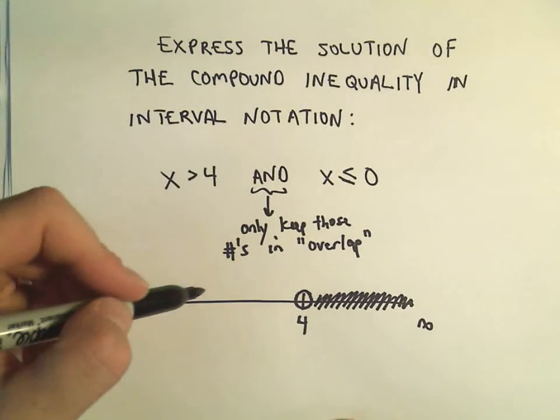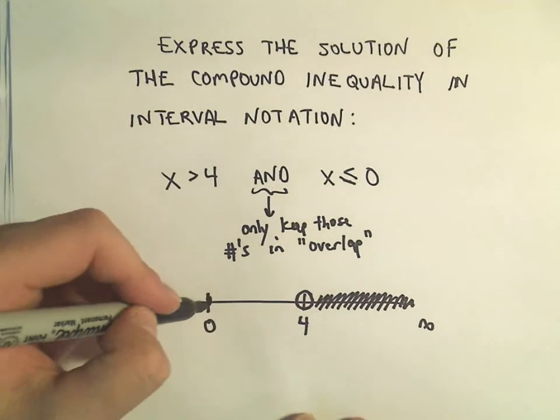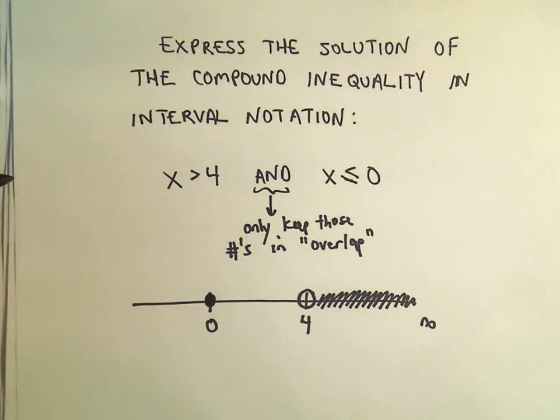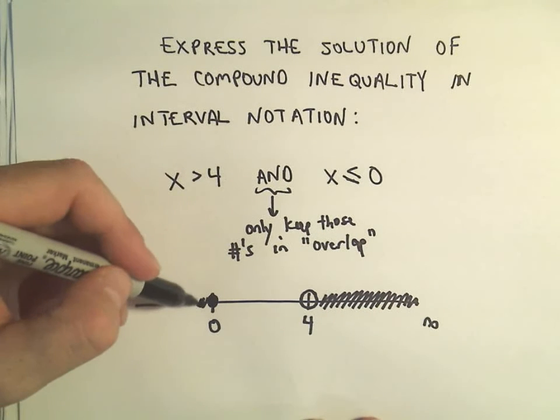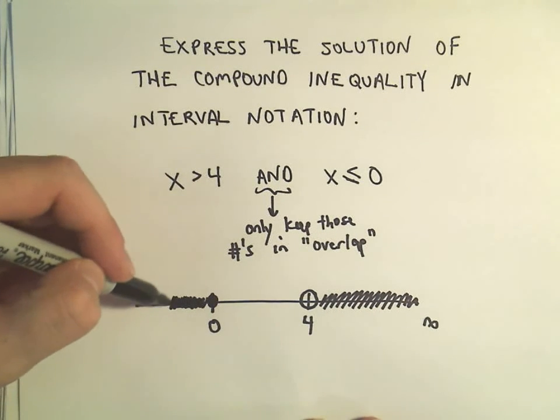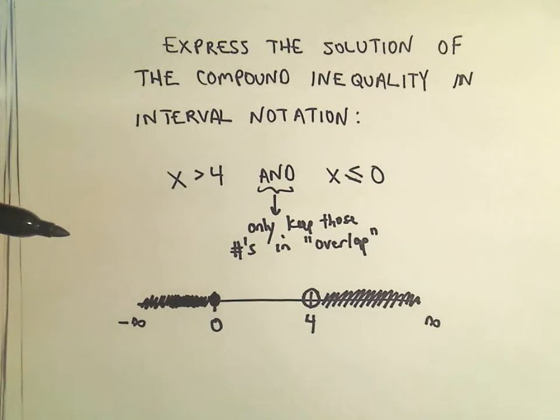And then x less than or equal to zero, so here's zero. Since it can equal zero, I'll shade it in and then we use everything to the left of it, all the way out to negative infinity.